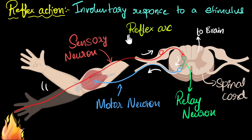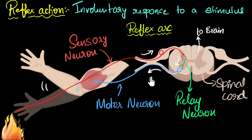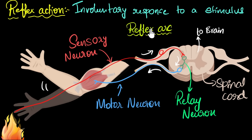In our example, the reflex arc consists of one sensory neuron, one relay neuron, and one motor neuron. Of course, some other reflex arcs might have more neurons, and some can have fewer. For example, that knee reflex we saw — it turns out it only has sensory and motor neurons; it does not contain a relay neuron. So some reflex arcs can have only two neurons, but the most common ones will have three neurons.